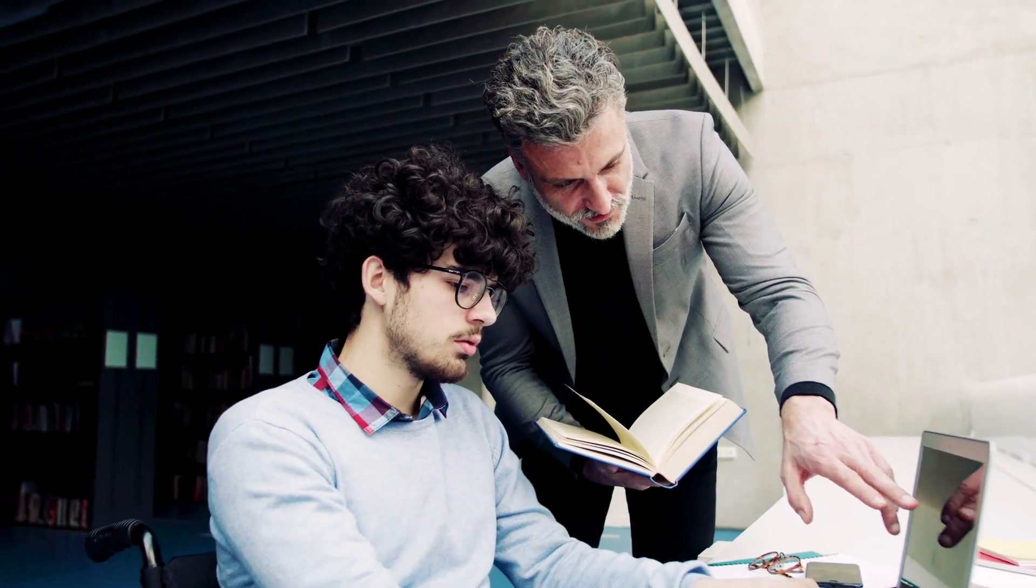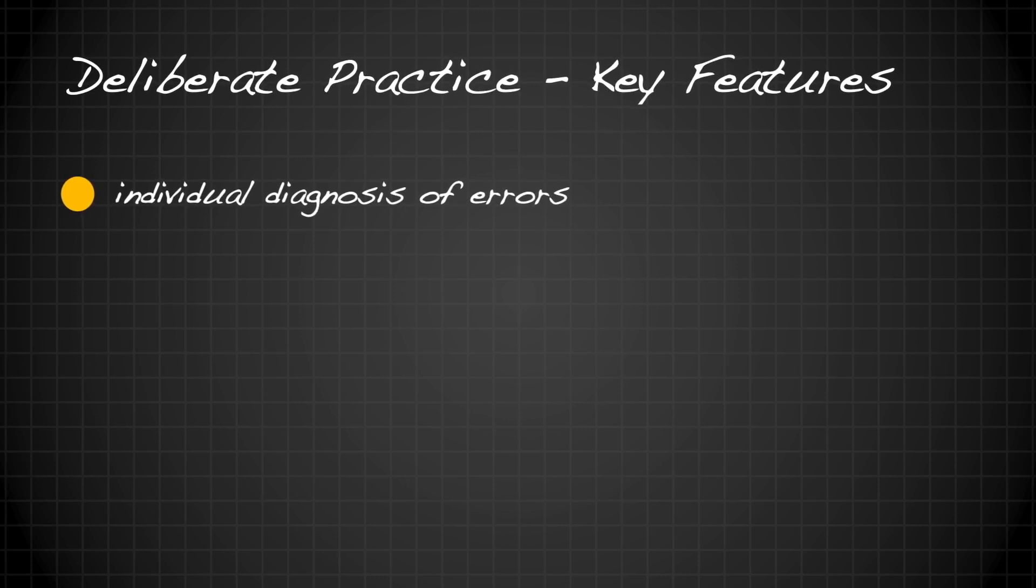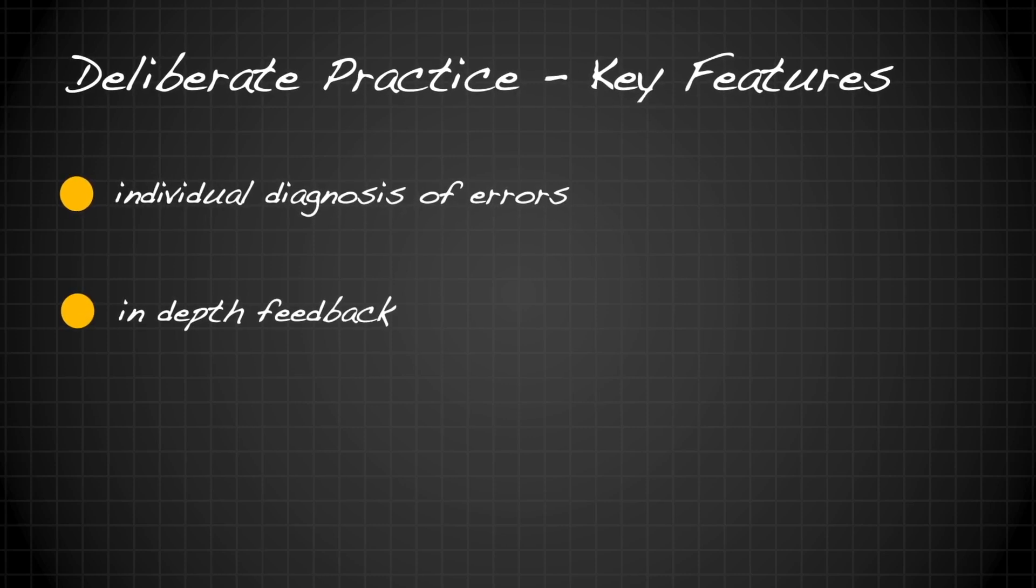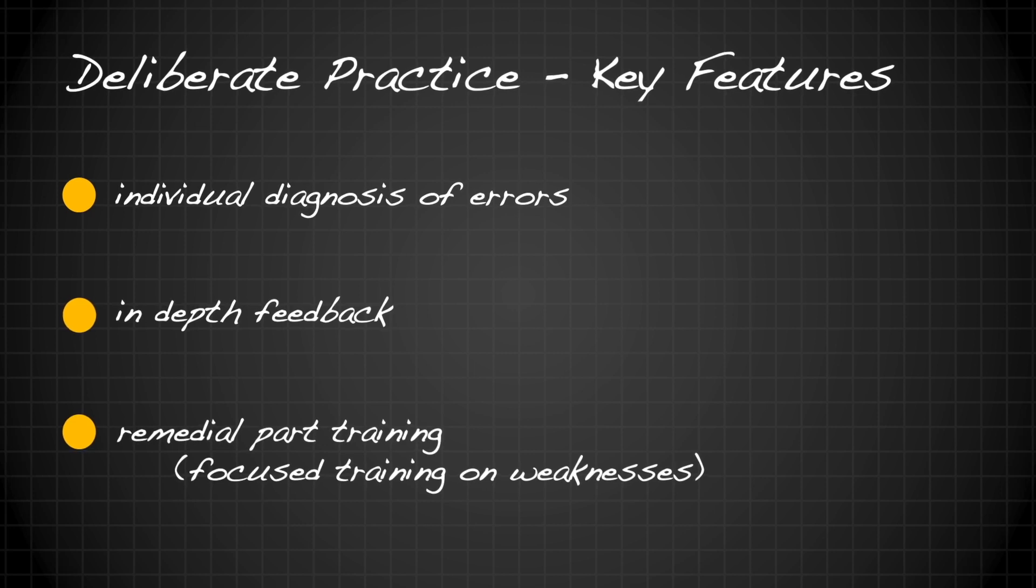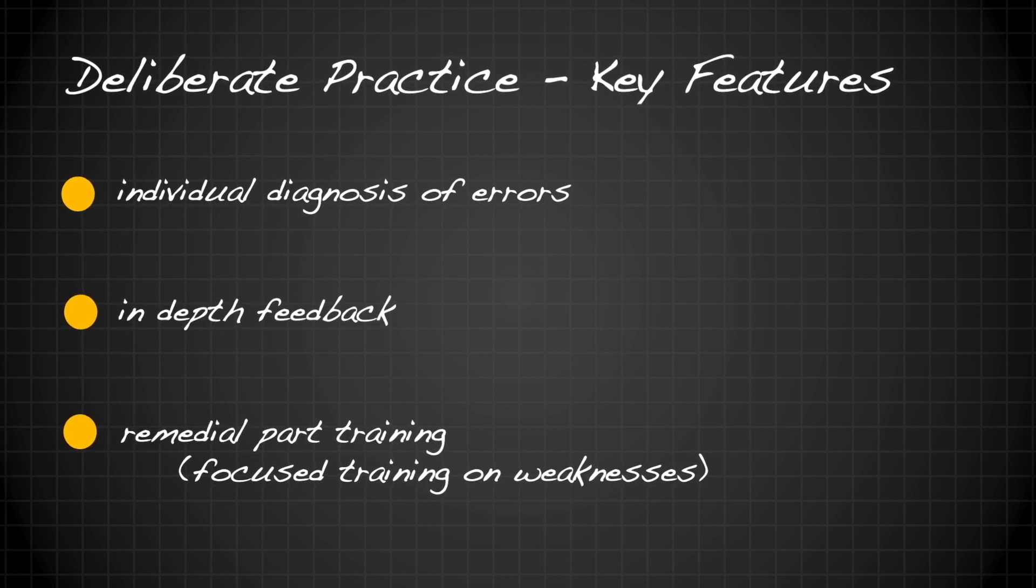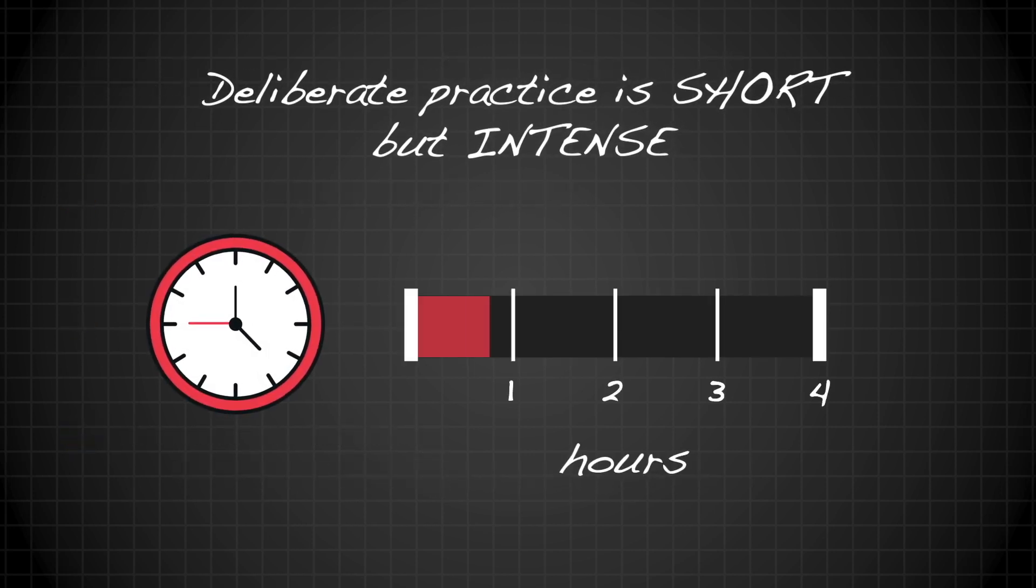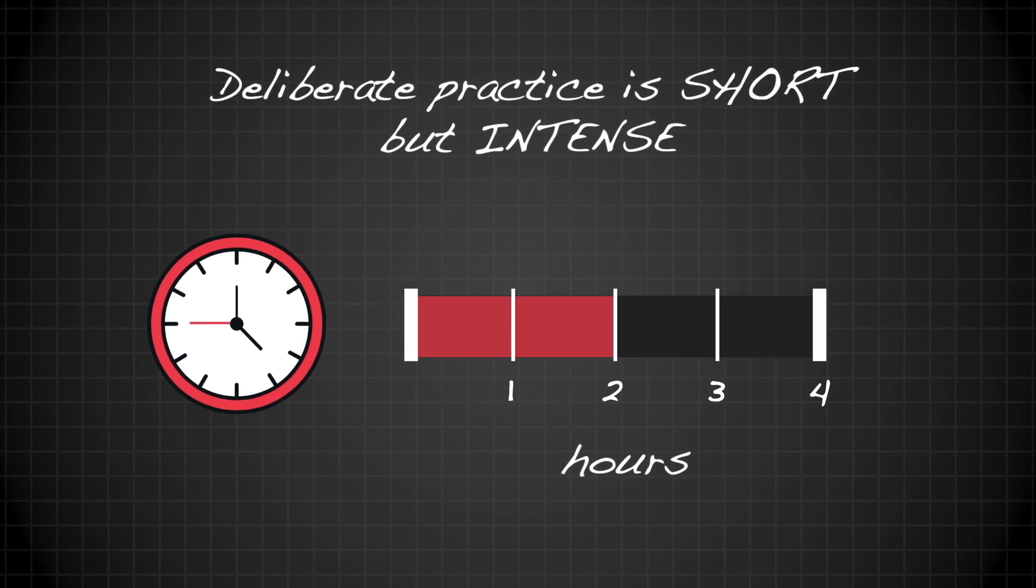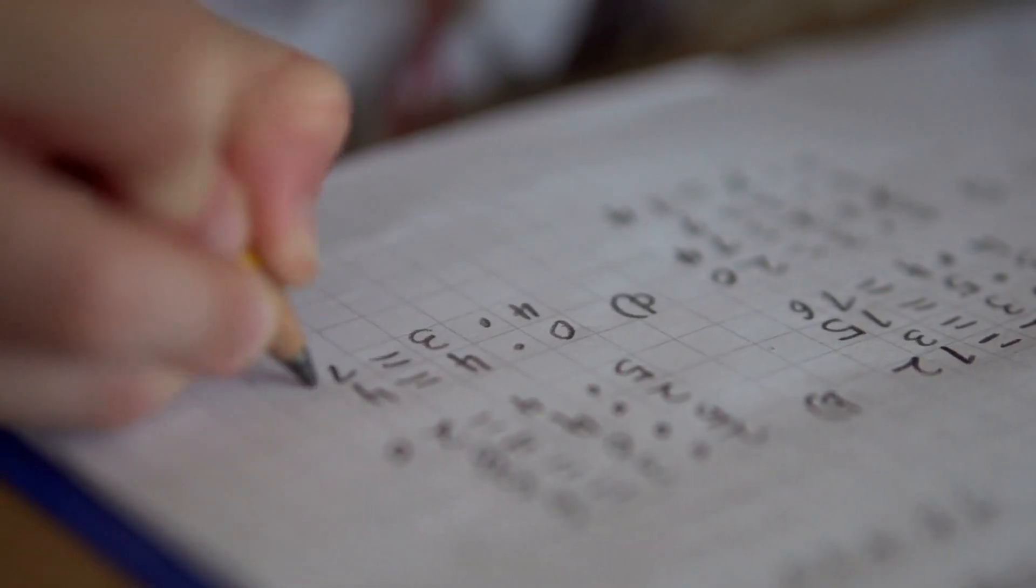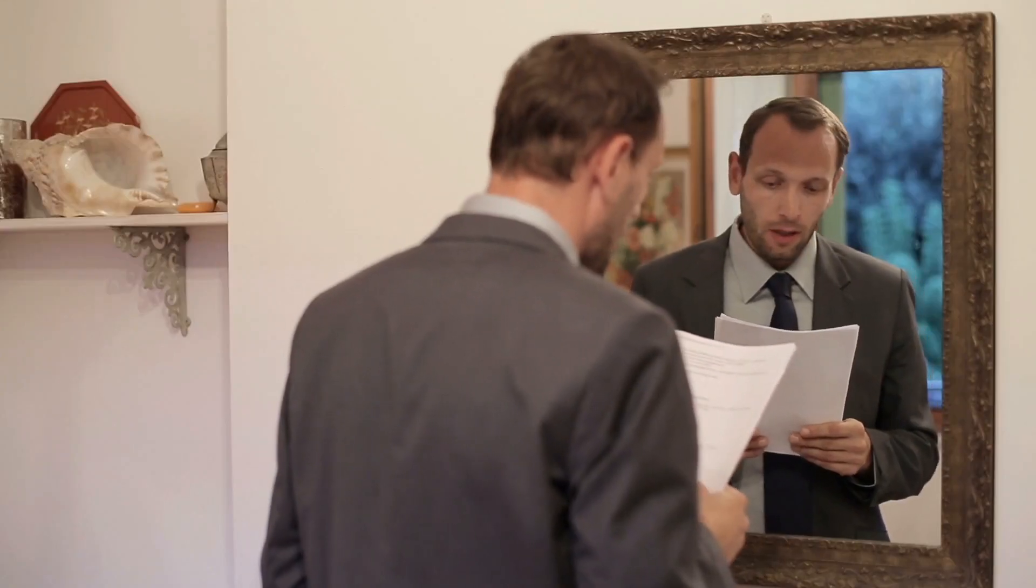In deliberate practice, students are supervised by an expert teacher who is responsible for diagnosing errors, providing in-depth feedback, and addressing areas of weakness through focused training. Typically, deliberate practice sessions are short. The optimal length is between one and two hours. But teachers typically provide personalized training tasks that can be done in between sessions.